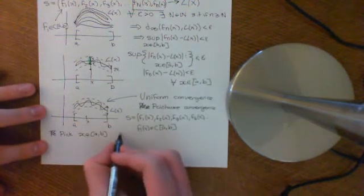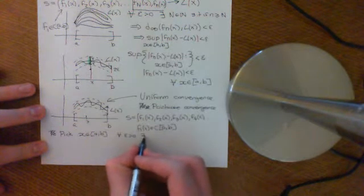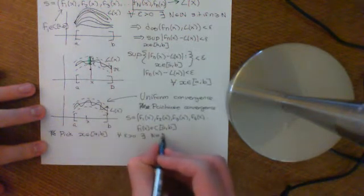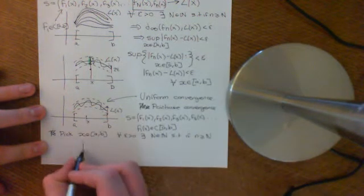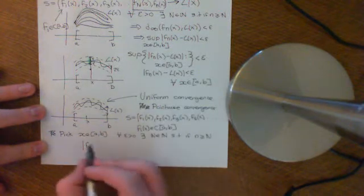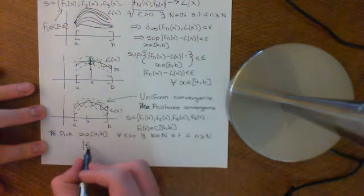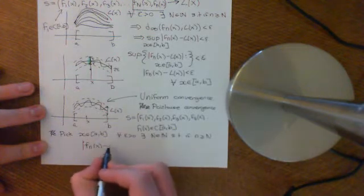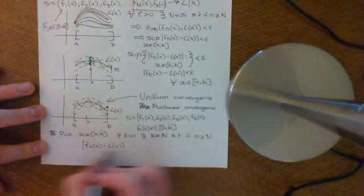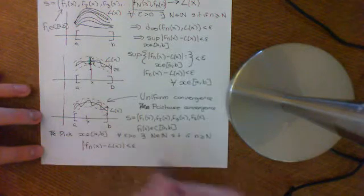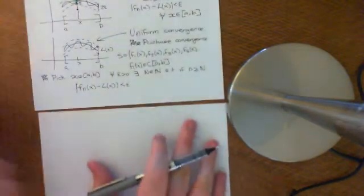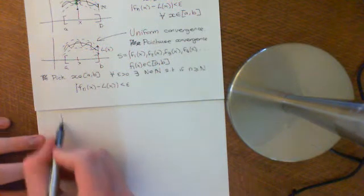Formally: for all ε > 0, there exists a big N which is an element of the natural numbers, such that if little n ≥ N, it implies that the modulus of Fₙ(x) minus L(x) — which you can think of as being the distance in the metric space of the real line — is going to be less than ε. So let me explain exactly what that means with a picture.